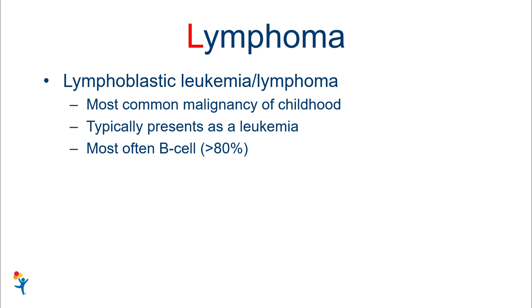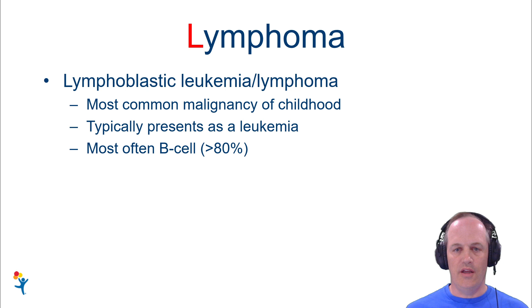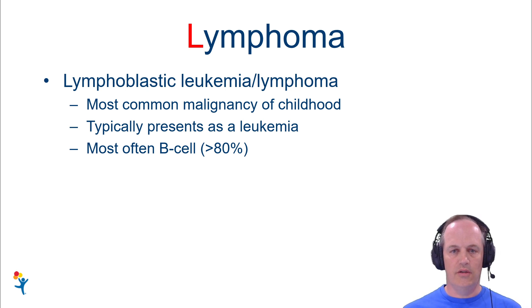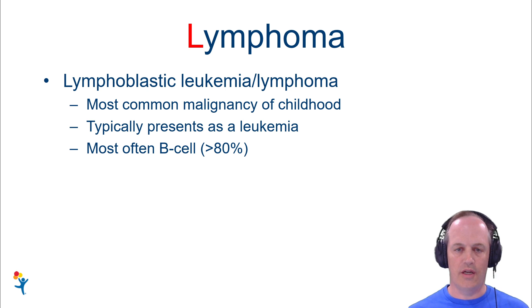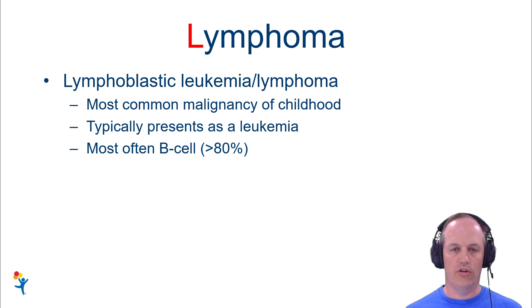Starting with L for lymphoma. Lymphomas may not be terribly common, and many of these things are not terribly common in kids, but lymphoblastic leukemia/lymphoma, particularly B cell, is quite common. It's the most common neoplastic diagnosis you're going to see in kids. Just because it's such a common malignancy, even though it doesn't typically present as a lymphoma, you have to be cognizant of it and make sure what you're looking at is not a lymphoma. B cells are definitely much more common than T cells, but both happen.